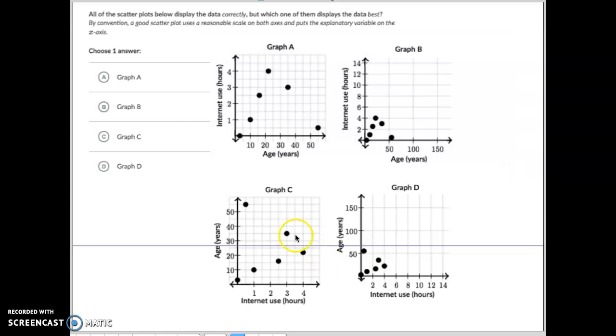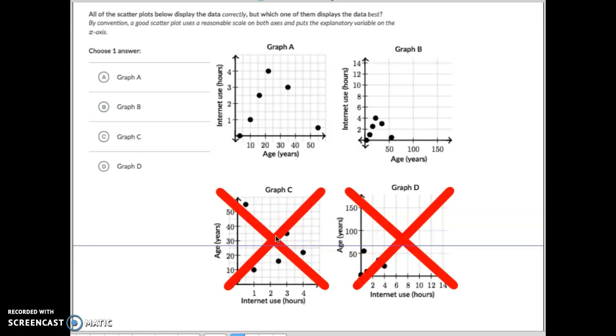So the nice part about it, we know letter C has the internet as the x and this one has the internet as the x. So we know these two right here are not correct. So I'm just going to x those out.